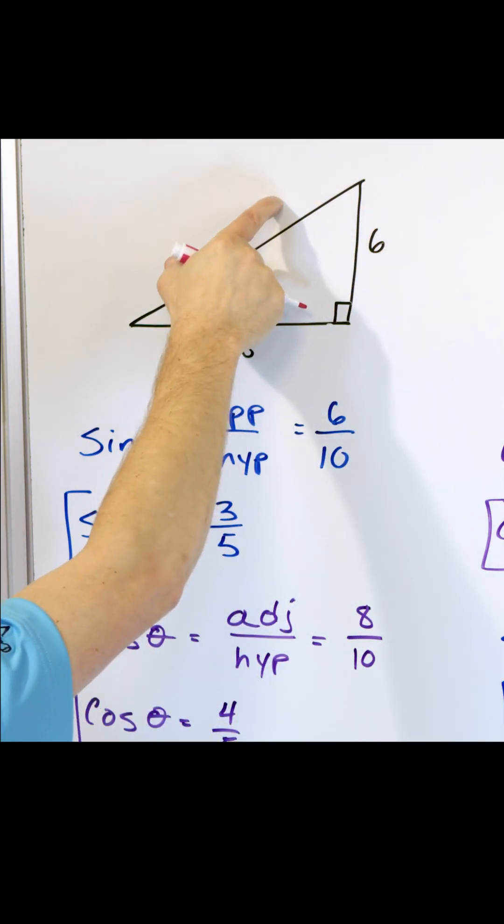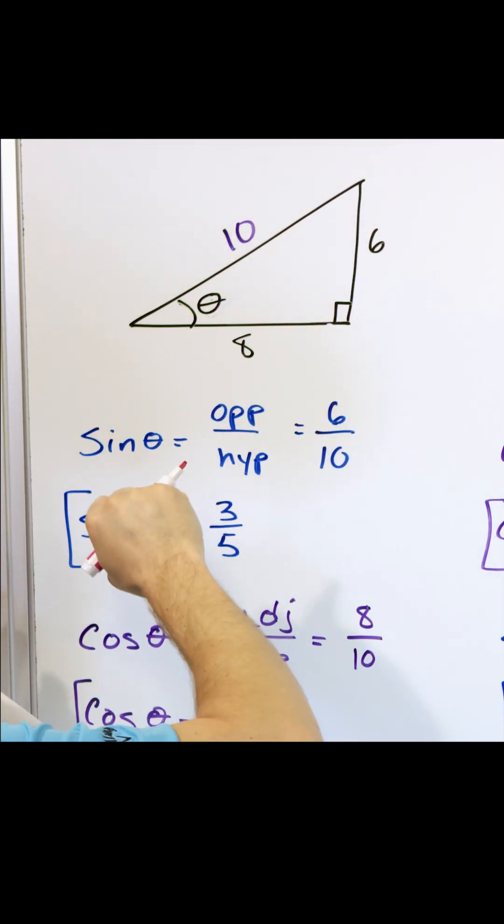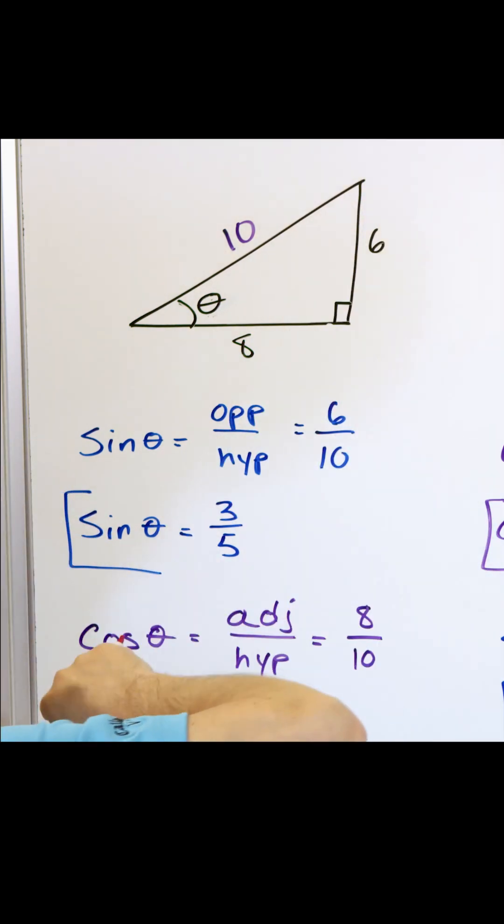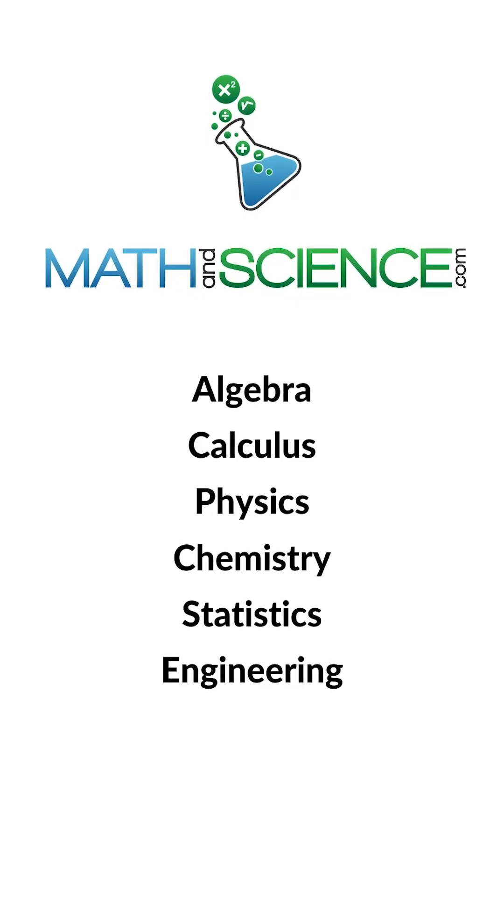So when you take any hypotenuse and multiply by the sine of the angle, it takes the hypotenuse and it chops it and gives you this side of the triangle. Learn anything at mathandscience.com.